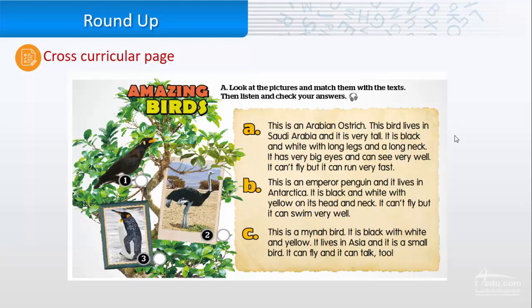C. This is a minor bird. It's black and white and yellow. It lives in Asia and it's a small bird. It can fly and it can talk, too. So, A is number two. B is number three, and C is number one.